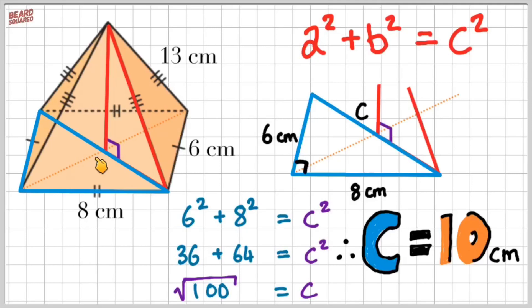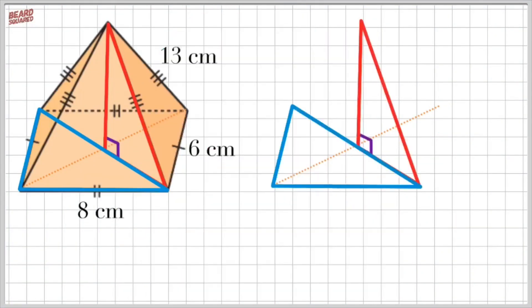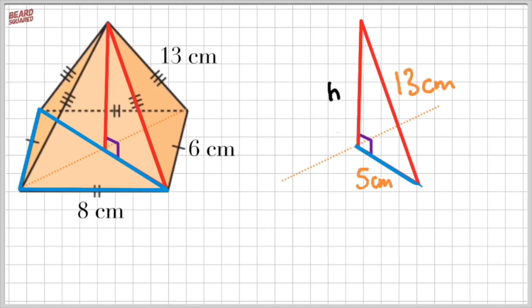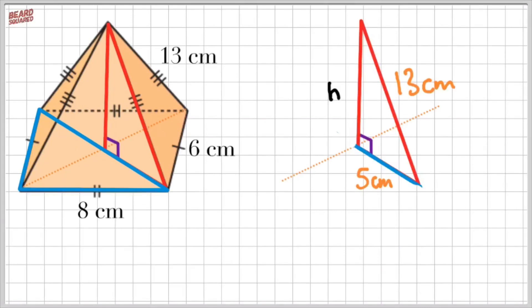Now we know that the diagonal of the base is 10 centimeters long. We can get rid of the blue triangles because we no longer need them — all we need is half of the base. This point is exactly halfway between the two diagonals, which is the exact center point of the pyramid. So we know that this is 5 centimeters by 13 centimeters, and we're trying to work out what the height is. We worked out the diagonal from vertex to vertex was 10 centimeters, so half of it is 5 centimeters.